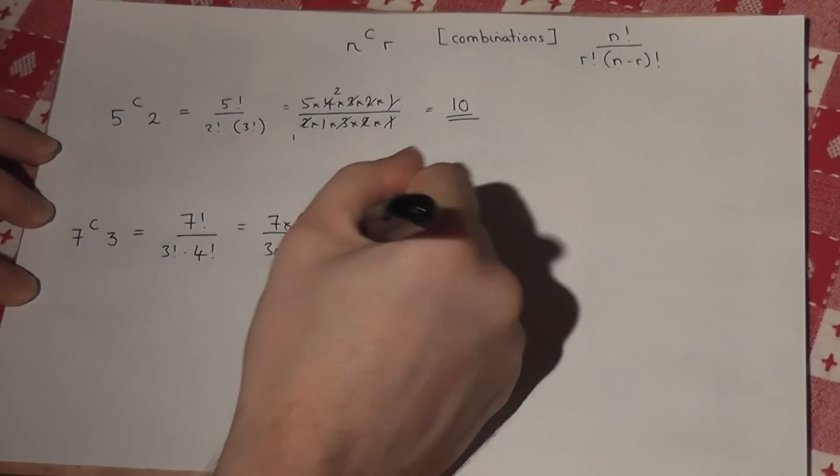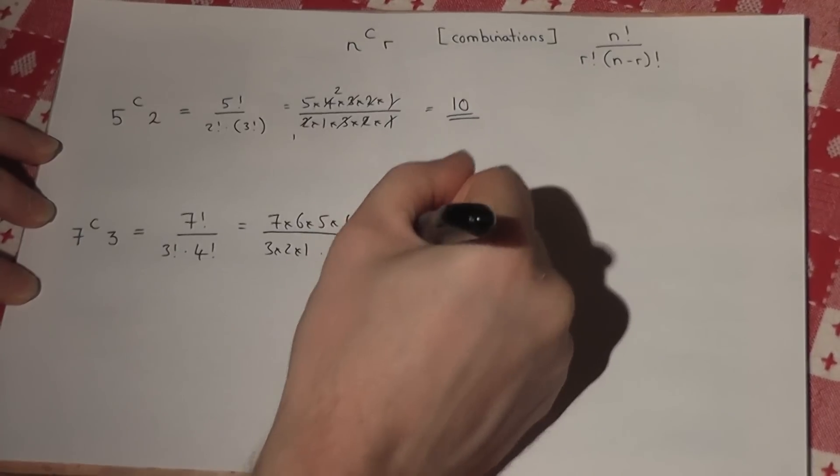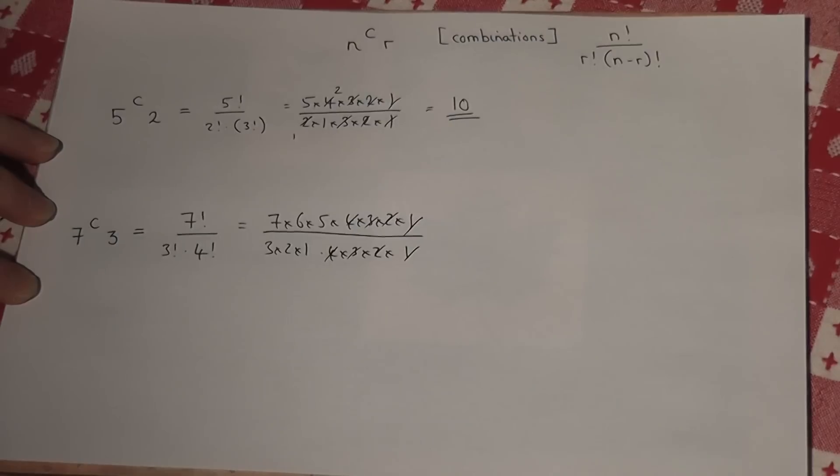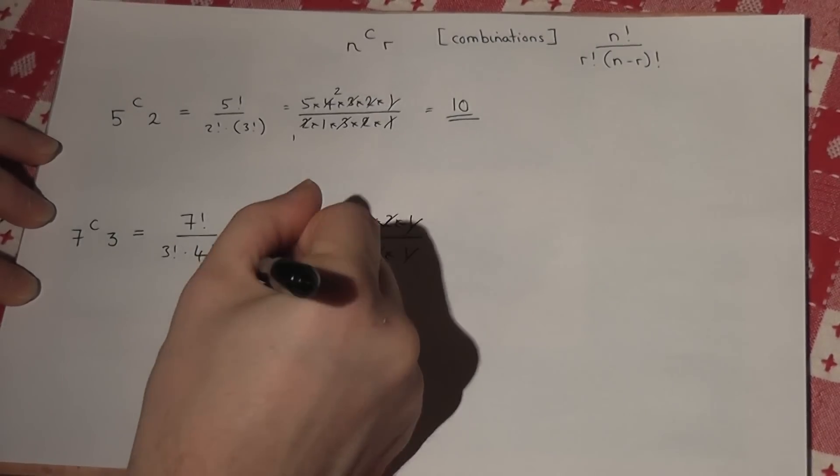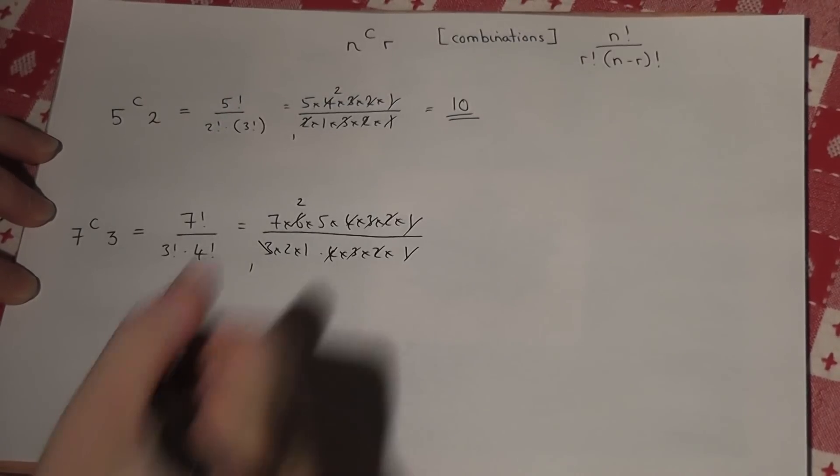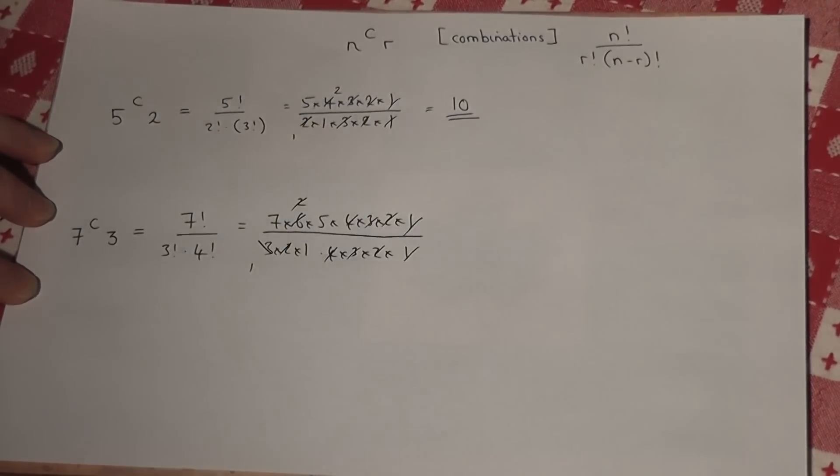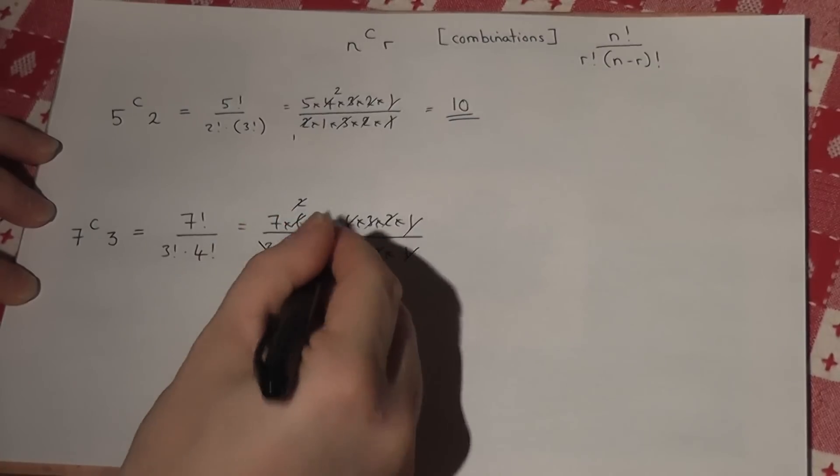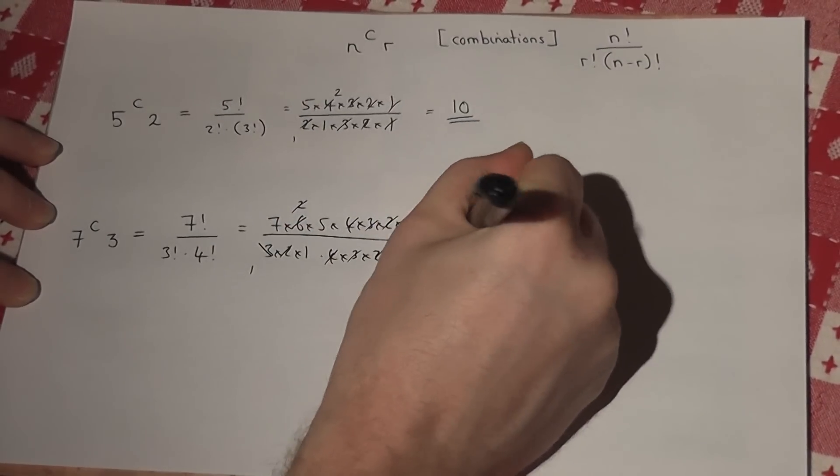And as always, a lot of it cancels off. There's 3, 5, 7 to 6 twice, 2, and 2 cancel off. So 7 times 5 is 35.